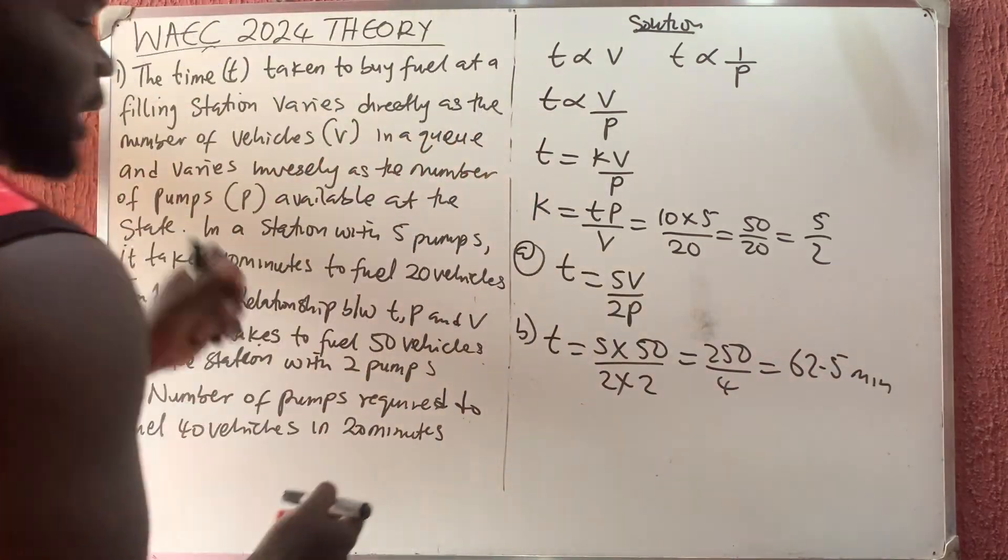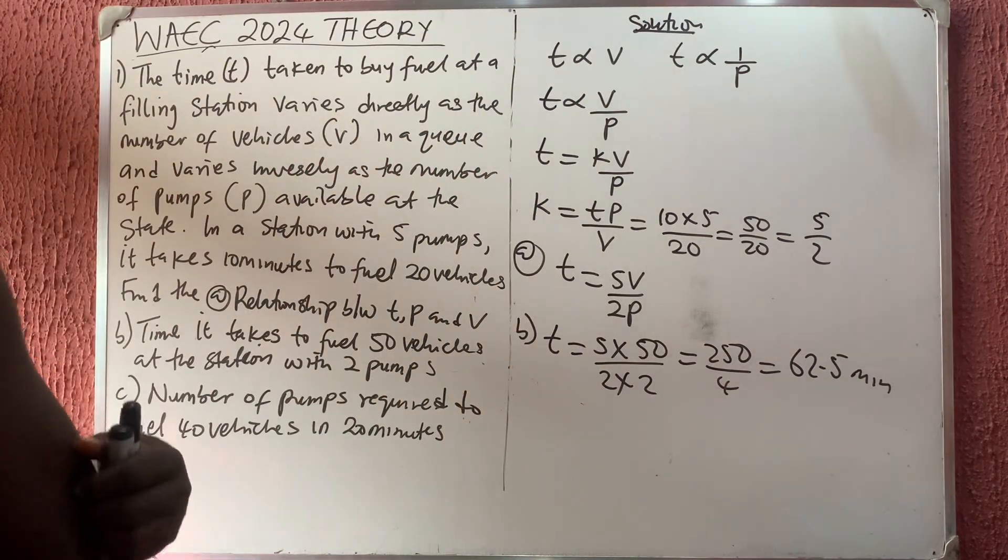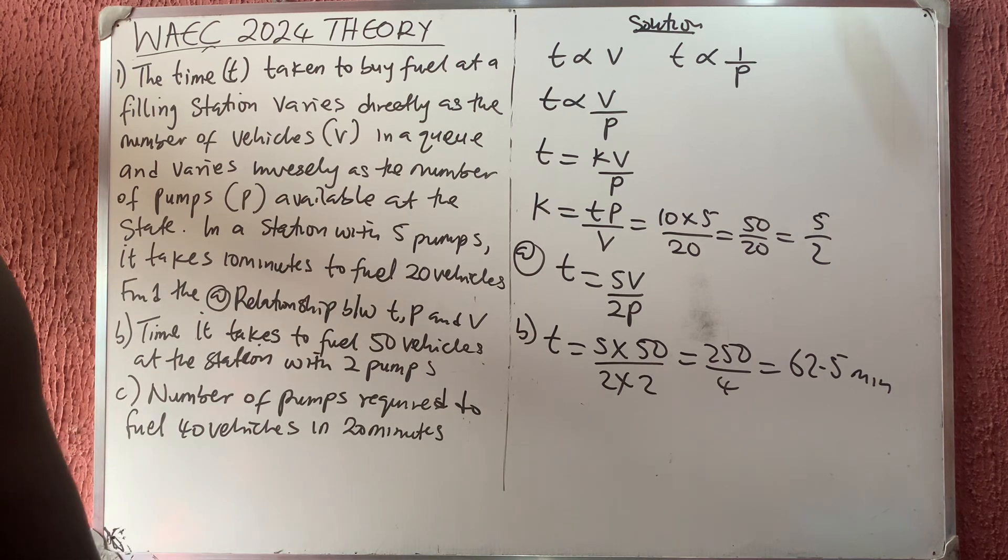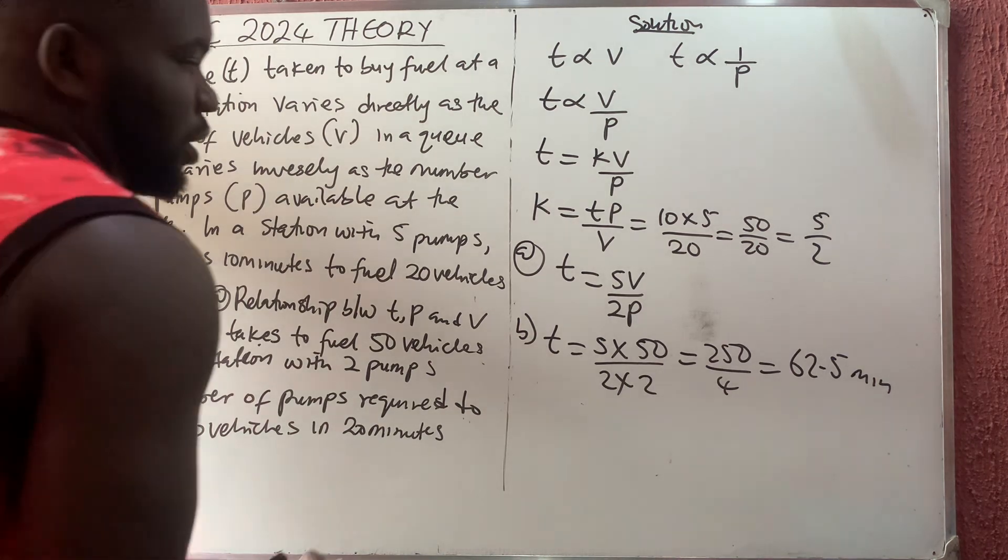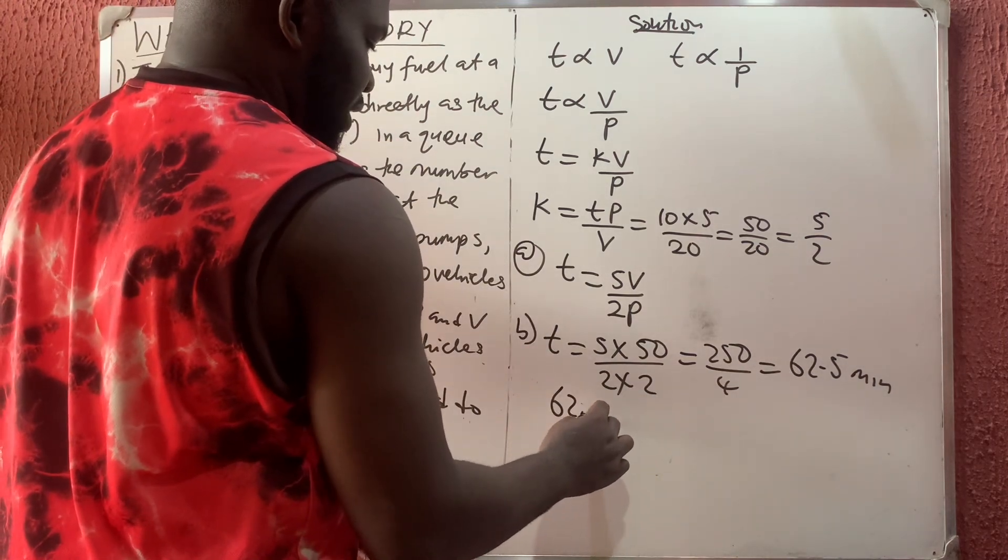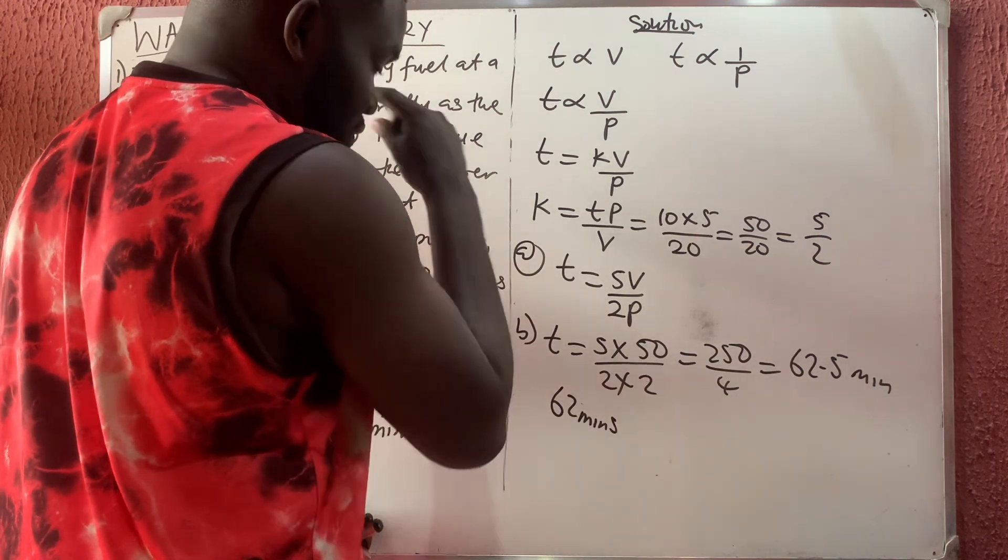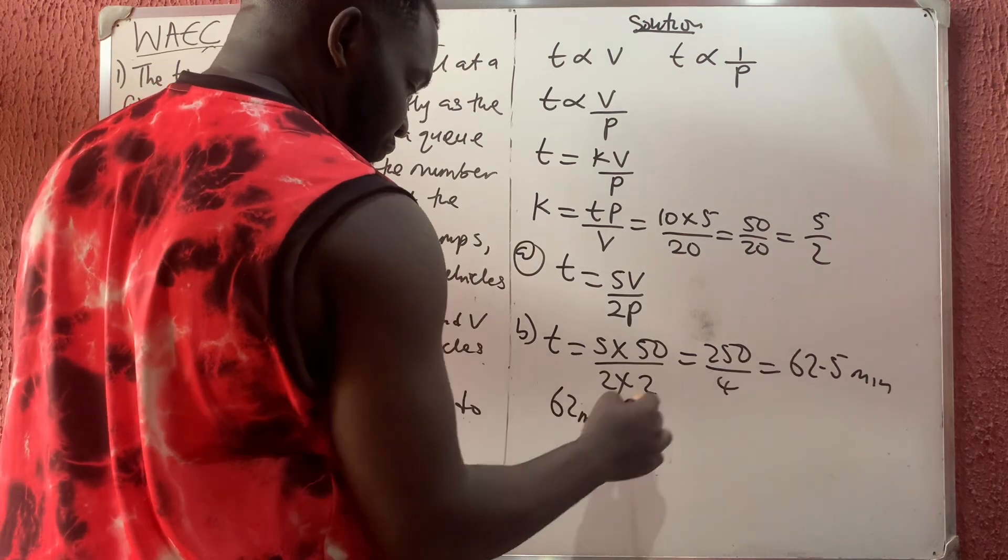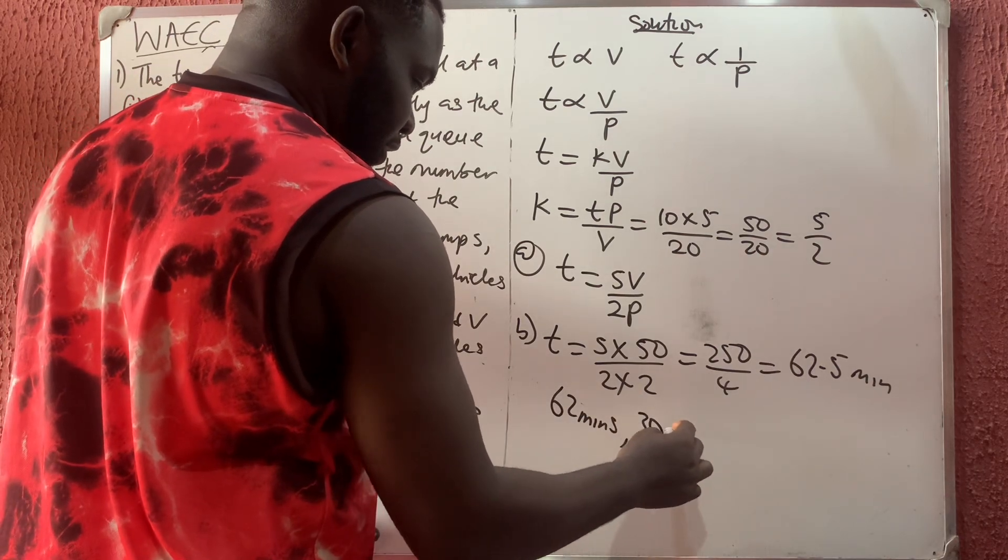So how do you convert it? That is 62 minutes 30 seconds. I hope you know, because 0.5 means half, so that is 62 minutes then half of 60, which is 30 seconds.